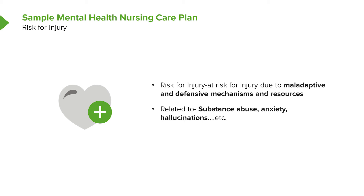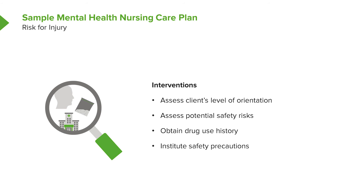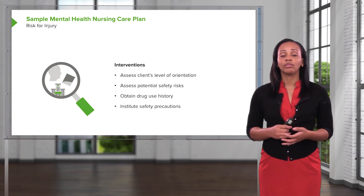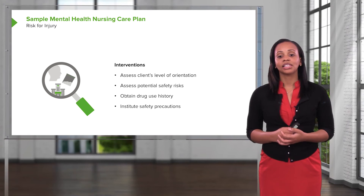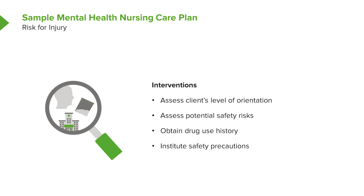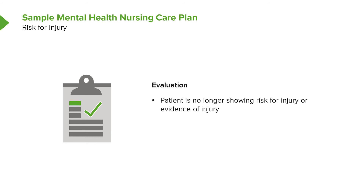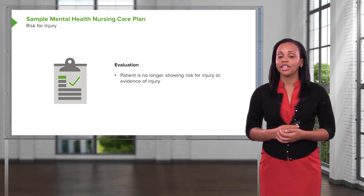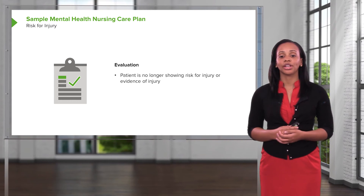Let's review a sample mental health nursing care plan — this one is risk for injury. The nursing care plan would read: Risk for injury due to maladaptive and defensive mechanisms and resources related to substance abuse, anxiety, hallucinations, delusions, or any other behaviors the patient may be exhibiting. Interventions could include assessing the client's level of orientation, assessing potential safety risks, removing objects the patient may use to cause self-injury, obtaining drug history and use, and instituting safety precautions on the unit. Always end with an evaluation — be sure to evaluate that the patient is no longer showing risk for injury or evidence of injury, assessed by both verbal and nonverbal communication.